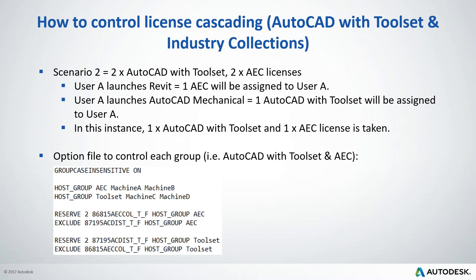For Scenario 2, it's quite similar. Split users into respective groups and exclude them accordingly. For the AEC Collections group, exclude them from taking AutoCAD toolset; and for the AutoCAD toolset group, exclude them from taking AEC Collections. Note that we are using simple scenarios to explain how cascading works with AutoCAD toolset and industry collections. If you have more licenses in your license file, you'll need to adjust the options file accordingly. Feel free to raise a support request if you need further help.